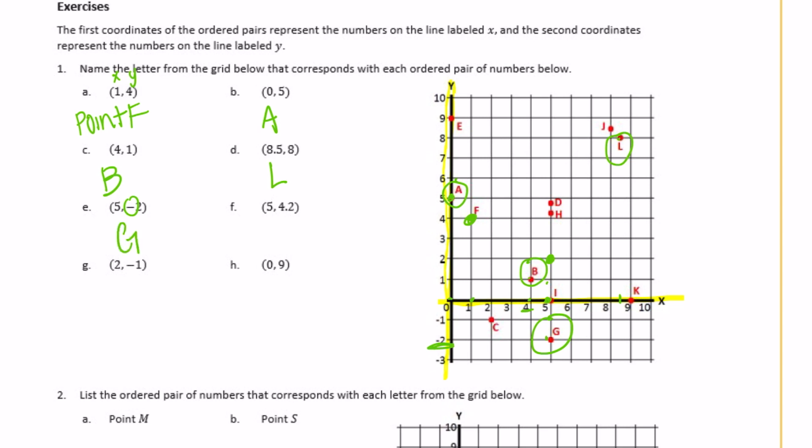f, 5, 4 and 2 tenths. So over to 5, and then up to 4 and 2 tenths. So 4 and 2 tenths would be h. g, 2, negative 1. So we're going to go over to 2 and down 1, because it's negative. So that's point c. And h, 0, 9. So 0, and then up to 9, would be e.